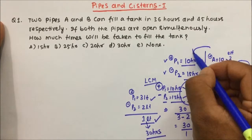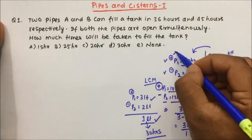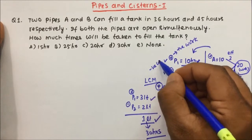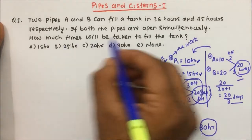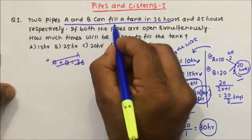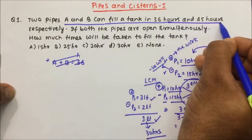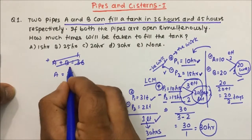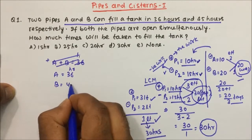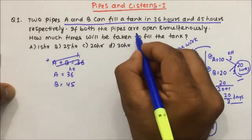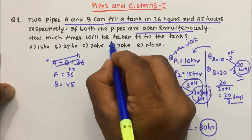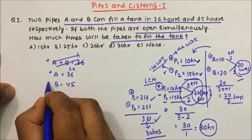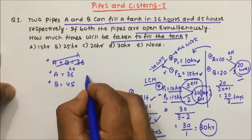So this is the basic concept of pipe and cisterns — it is very much similar to time and work. The only difference is that here we will have positive work and we will have negative work. Now let us solve question number 1: Two pipes A and B can fill a tank in 36 hours and 45 hours respectively. If both pipes are open simultaneously, how much time will be taken to fill the tank? Both are doing positive work — both are filling the tank.